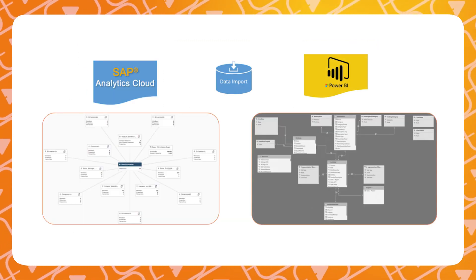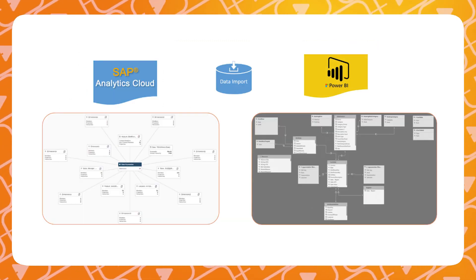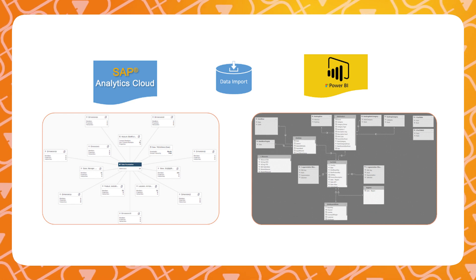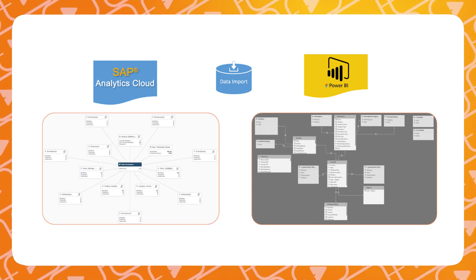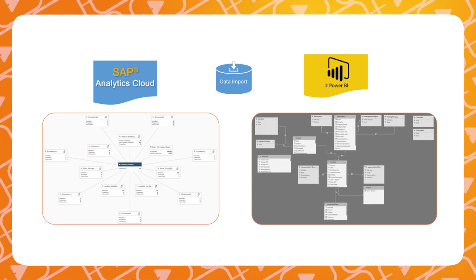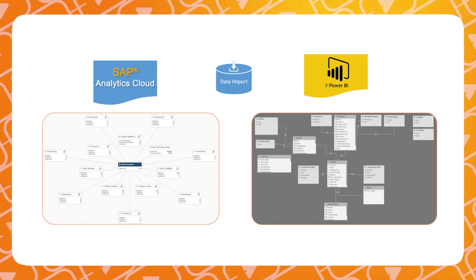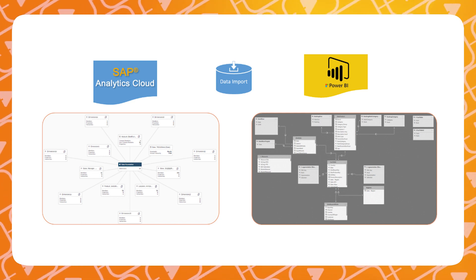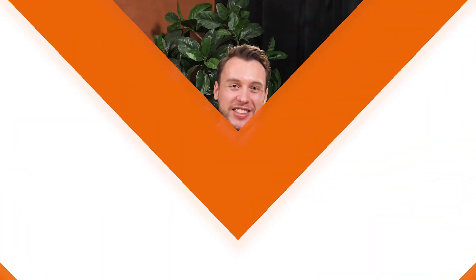And finally, step four: modeling and reporting. If your choice isn't crystal clear yet, consider this — Power BI is king when it comes to data modeling, giving you a powerful analytic engine and more data preparation freedom. SAC enforces the STAR model and has limited data preparation options.